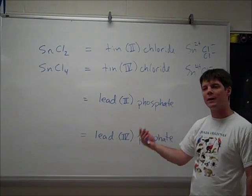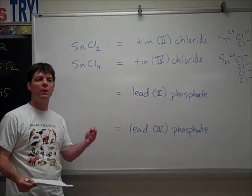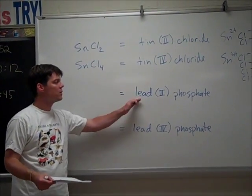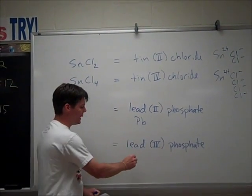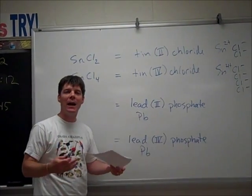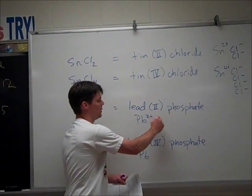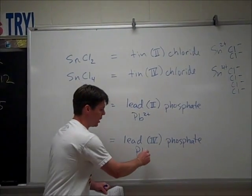Now let's look at a couple examples of going the opposite direction. What if we're given the name and we want to determine the formula for the compound? So lead has the symbol Pb. Lead(II) means that I have a lead ion with a positive two charge. Lead(IV) means that I have a lead ion with a plus four charge.